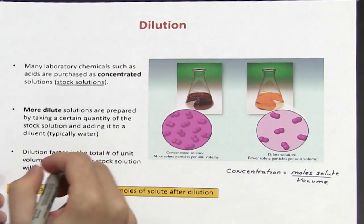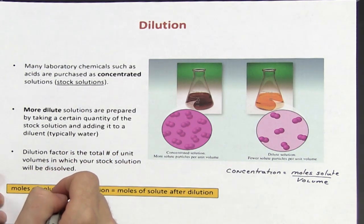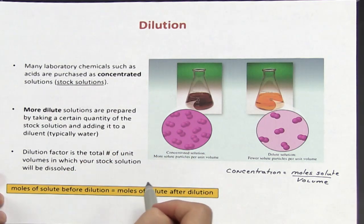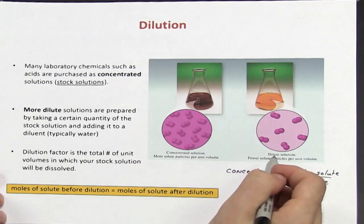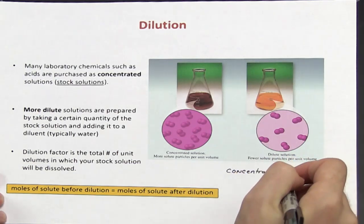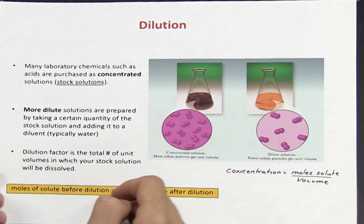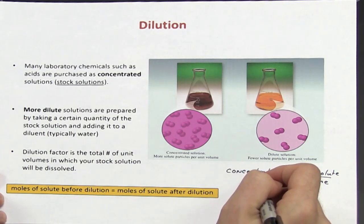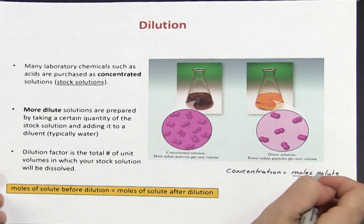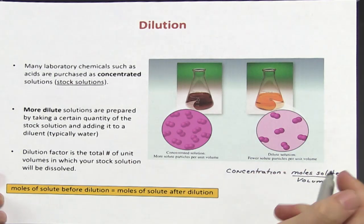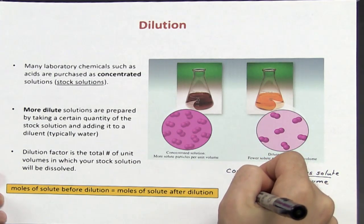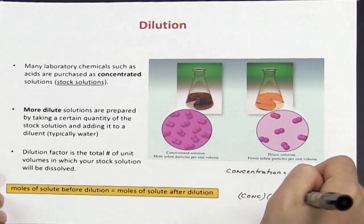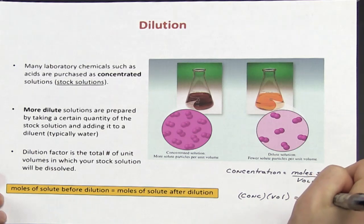When we make dilutions, the moles of solute before the dilution — what's in your stock solution — should equal the moles of solute in your diluted solution. If I take the formula concentration equals moles divided by volume and rearrange the variables, I can get that concentration times volume equals moles of solute.